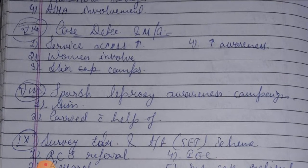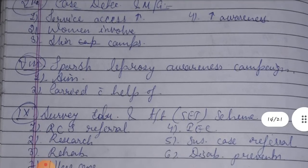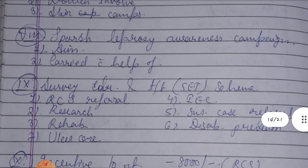Seventh, Case Detection and Management. First, increase service access for case detection control. Second, women's involvement. Third, skin camps. And fourth, increase awareness. Services access, women's involvement, skin camps, and awareness programs are all used to increase leprosy case detection and control.